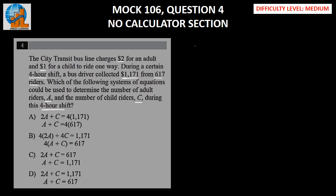We know that the number of adults we have are A and the number of child riders we have are C. The total number of riders during this is 617, which implies A plus C has to be equal to 617.